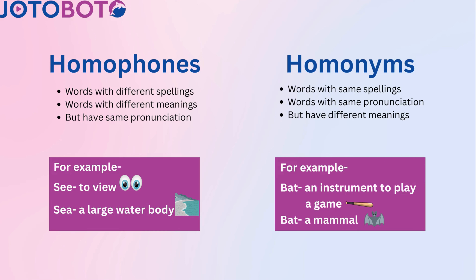Homophones are words which have different spelling and meanings, but have the same pronunciation. For example, S-E-E and S-E-A: 'see' (S-double-E) means to view, and 'sea' (S-E-A) is a large water body.